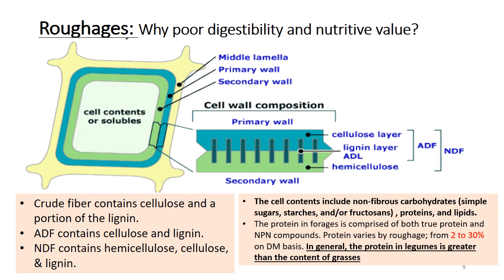The cell contents include non-fibrous carbohydrates, sugar, starch, fructose, proteins, and lipids — all available to the animal. The protein in forages comprises both true protein and non-protein nitrogen (NPN) compounds. Protein varies by the type of roughage, ranging from 2 to 30 percent on a dry matter basis. In general, protein in legumes is greater than that of grasses. If cell walls are broken and enzymes gain access to cellulose, hemicellulose, and soluble cell contents, roughages can have good nutritive value.